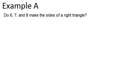In example A, it says, do 6, 7, and 8 make the sides of a right triangle? So what we're trying to see is if this triangle exists, if there's a right triangle where the two legs are 6 and 7 and the hypotenuse is 8. Now if it's a right triangle, I know that the hypotenuse would be 8 because it's the largest or the biggest of these three numbers.